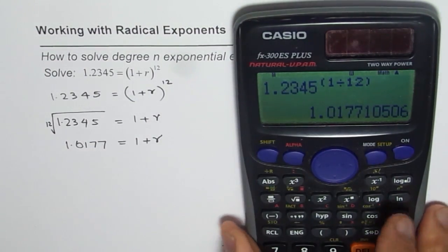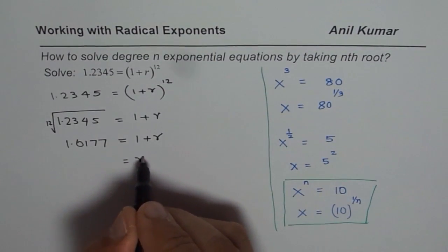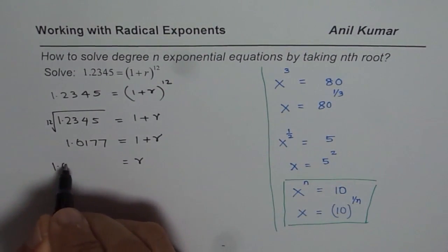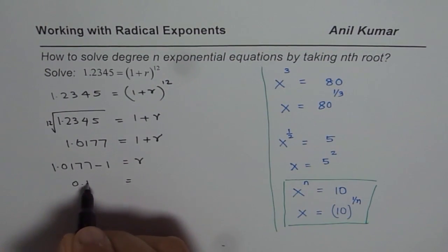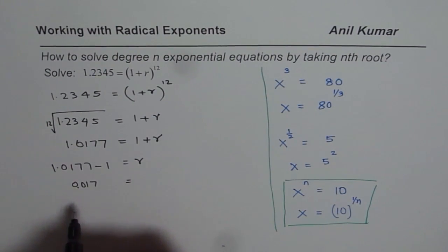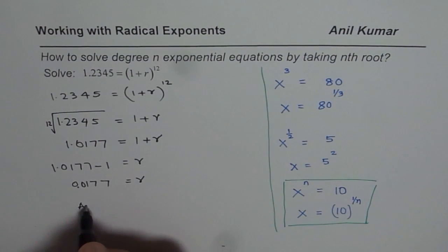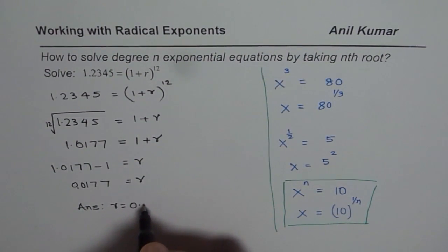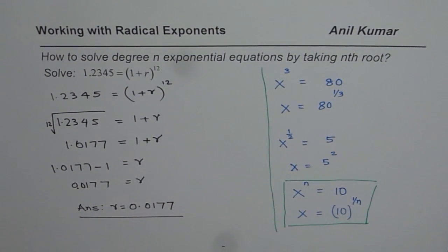Now to find r, what should we do? We have to take away 1, so we know r is equals to 1.0177 minus 1 or r is 0.0177. So we can write down our answer and that is r equals 0.0177. That is how we could actually solve such an equation.